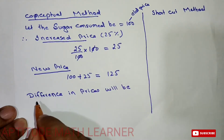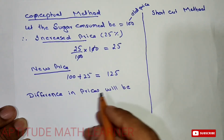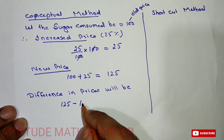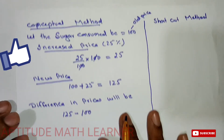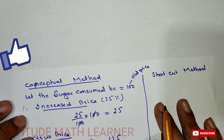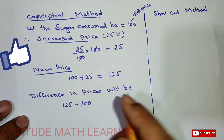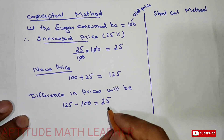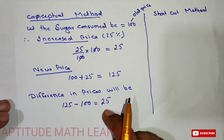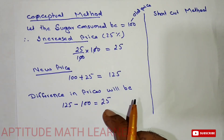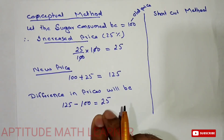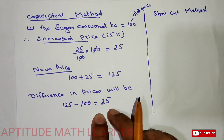The difference between the new price and the old price is: 125 minus 100, which gives us 25. So 25 rupees has been increased.